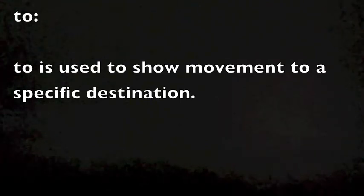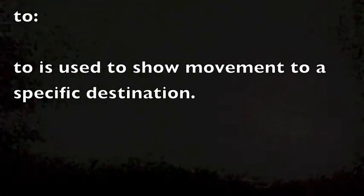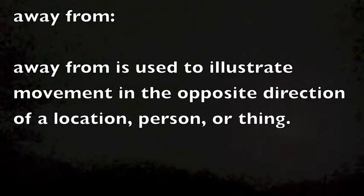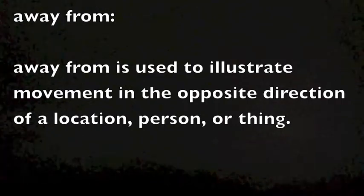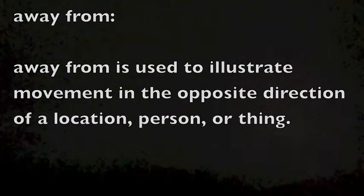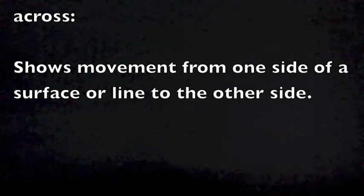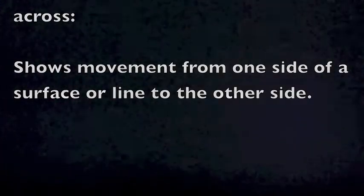Here are some descriptions. "To" is used to show movement to a specific destination. "Away from" is used to illustrate movement in the opposite direction of a location, person, or thing. "Across" shows movement from one side of a surface or line to the other side.